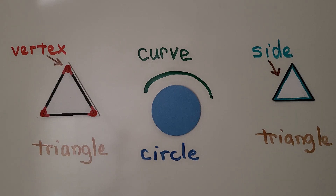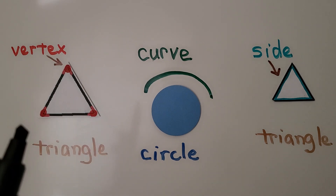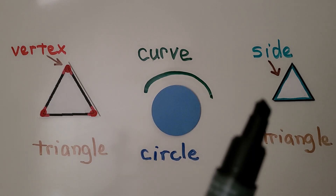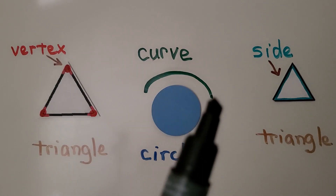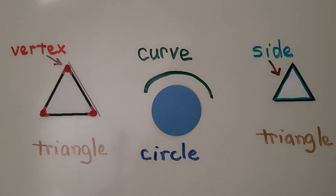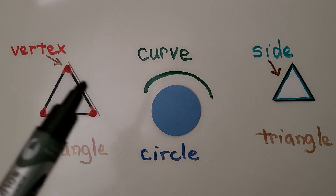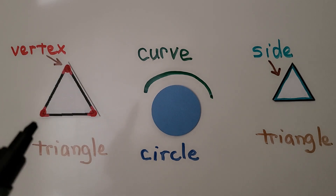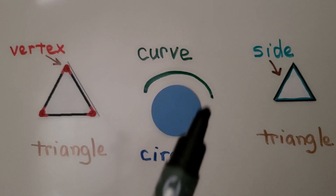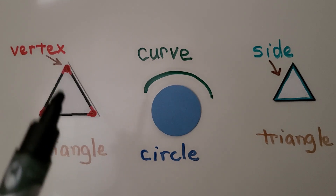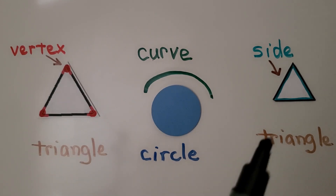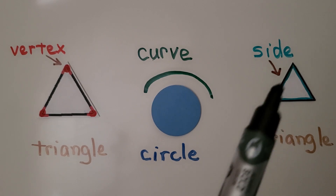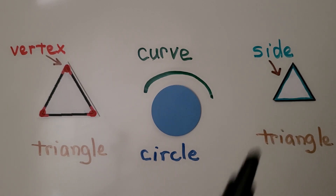To sort shapes into sets of alike and different, we can use information like how many vertices they have, how many sides they have, or if they have a curve. Remember, a vertex is where two lines meet. A triangle has three vertices. A curve doesn't have any vertices — a vertex is a corner, and circles don't have corners. A side is a straight line, and a triangle has three sides.